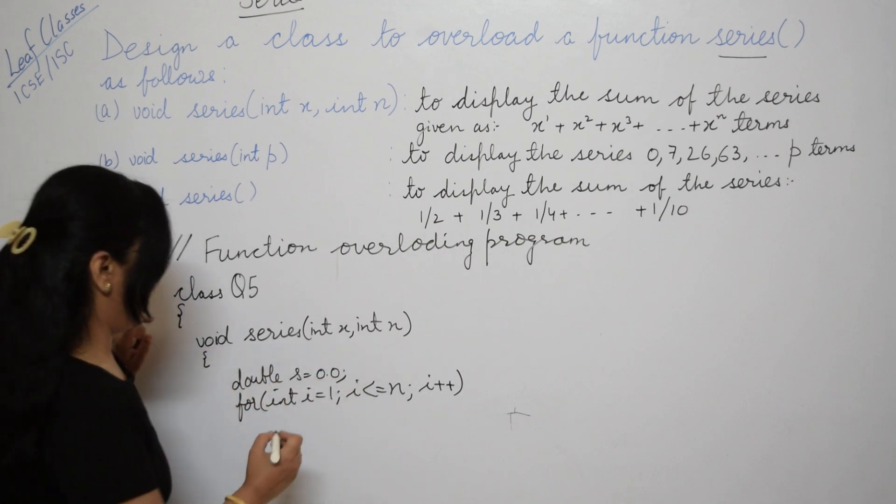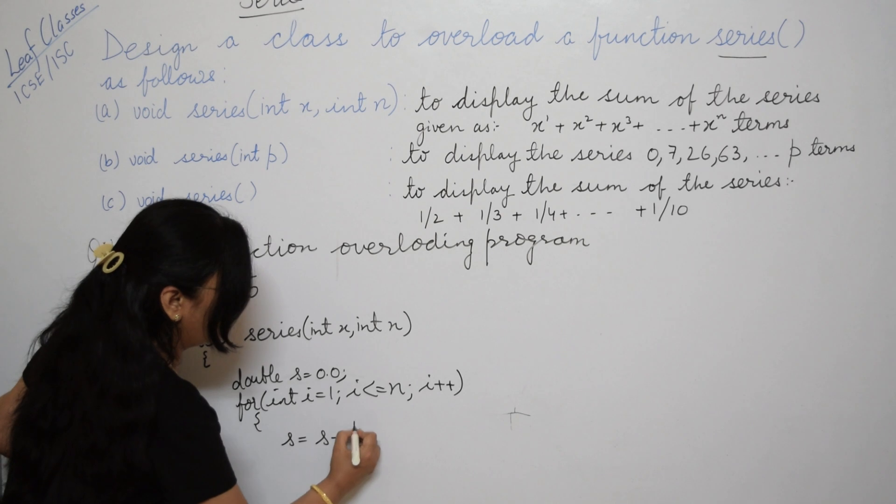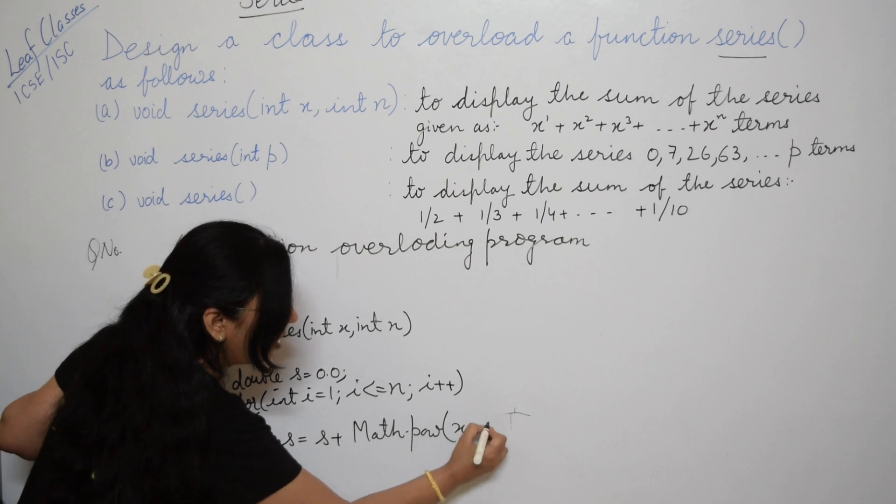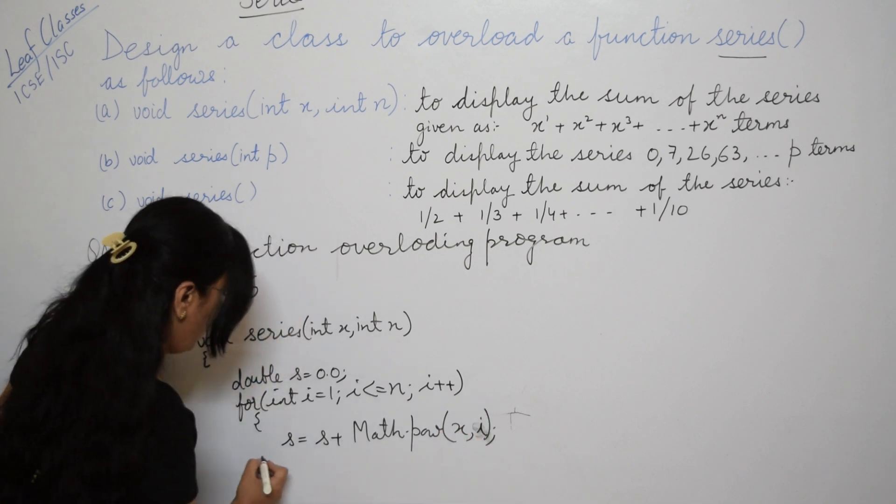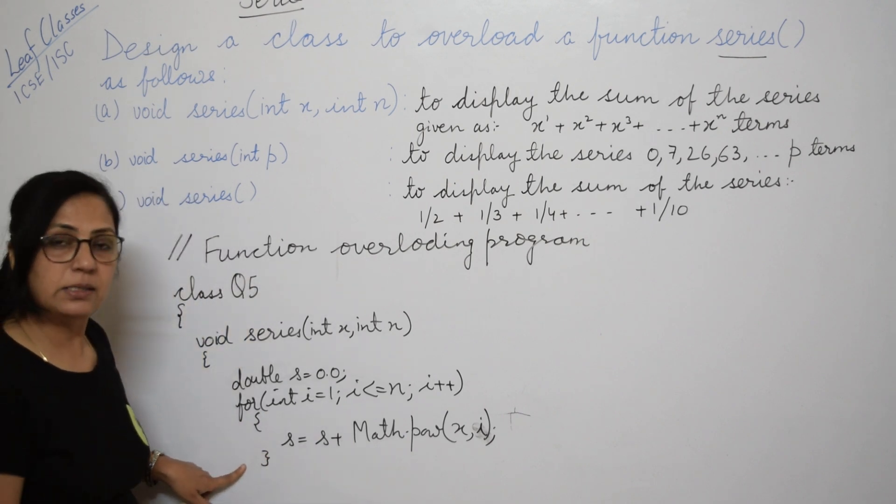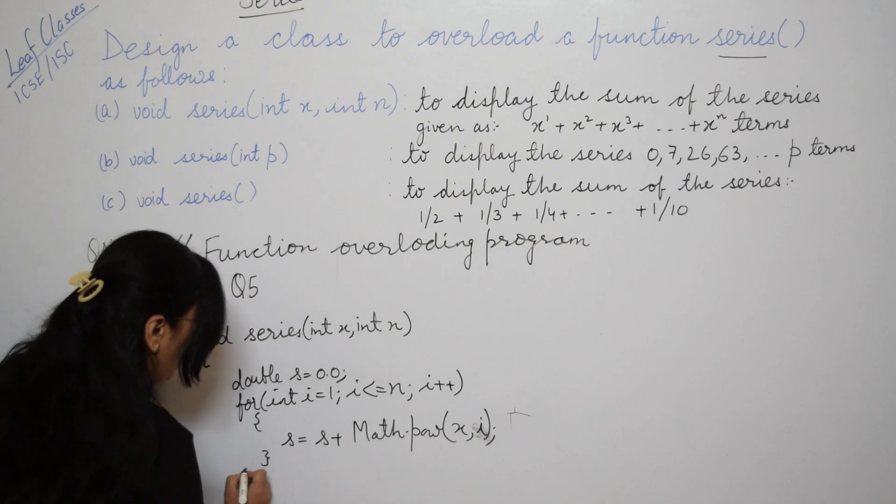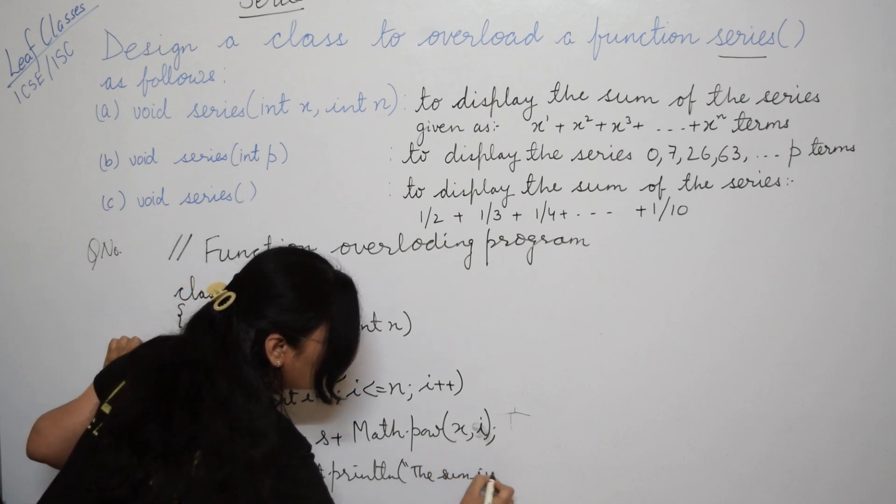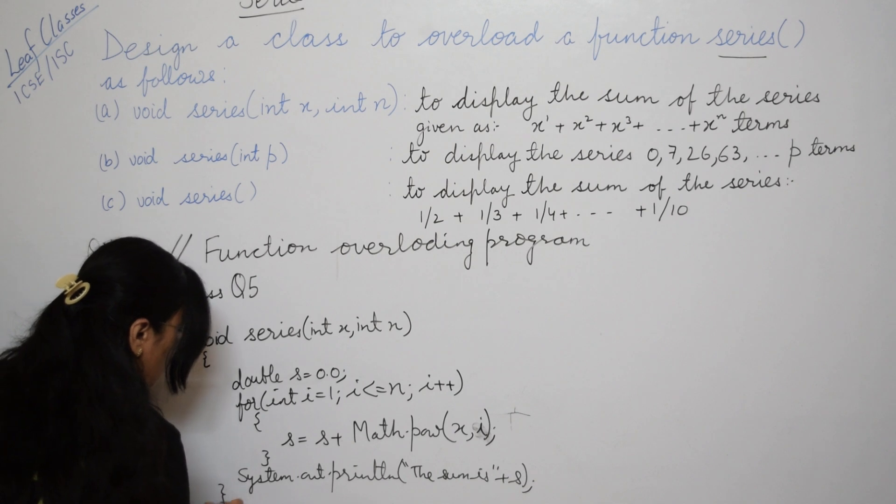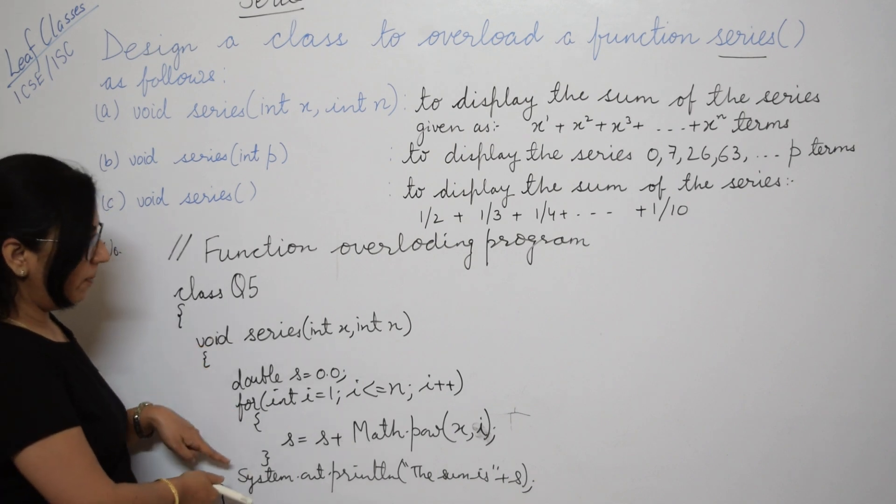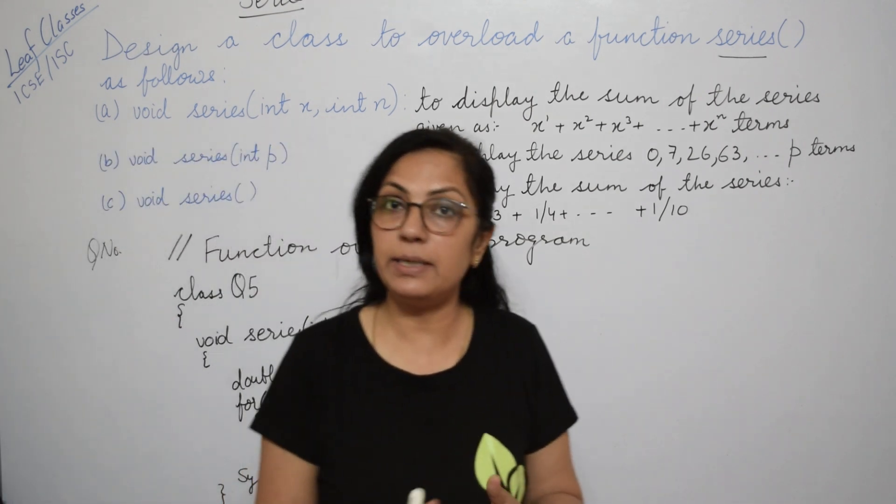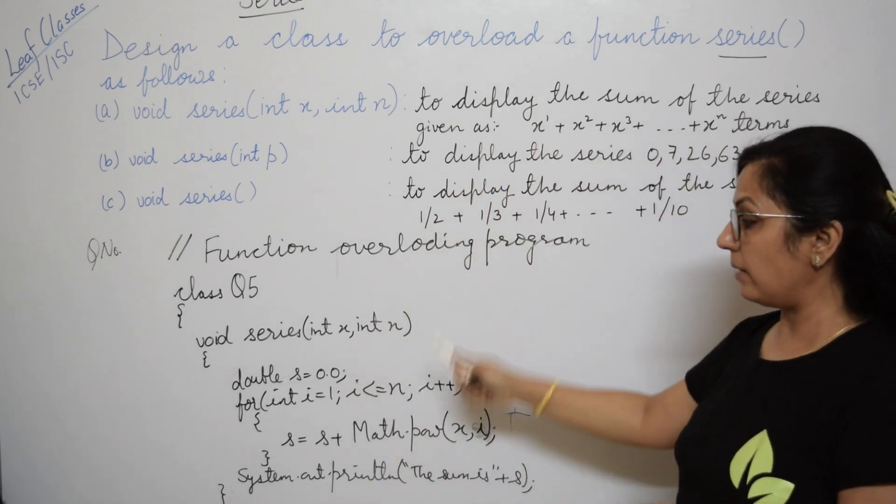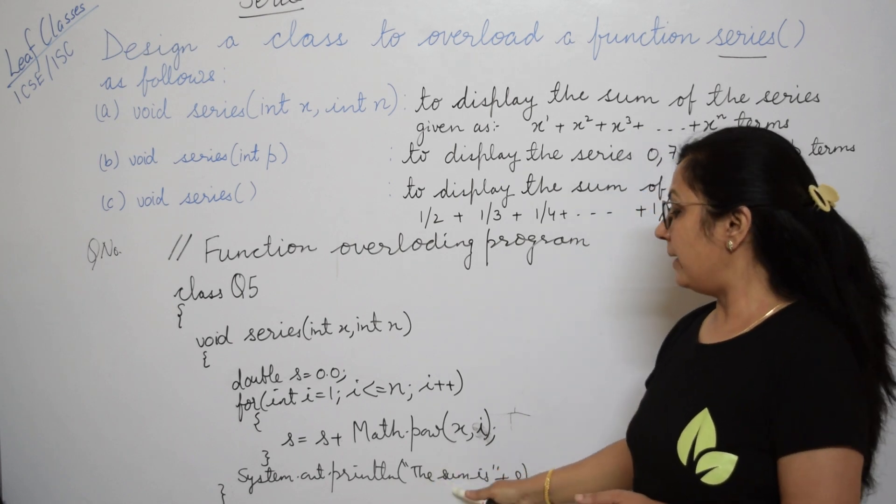The value of i will be 1, 2, 3, 4 and the final value is n which we receive. Here you write s equals s plus Math.pow x comma i to calculate the power value. If one statement is there, these braces are optional. Then write system.out.println the sum is plus s and close this function. Since void is there, this function is not returning any value. We need output, so the print statement we have to give.